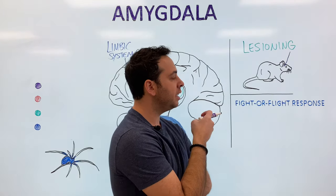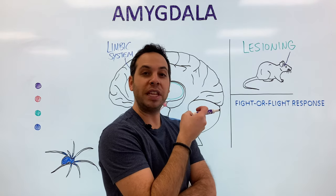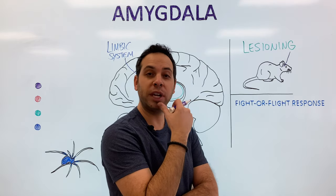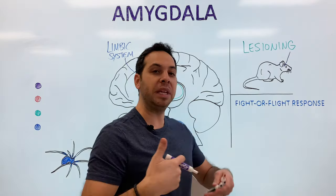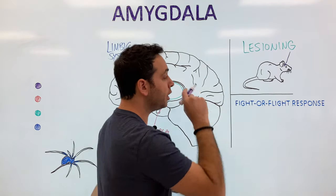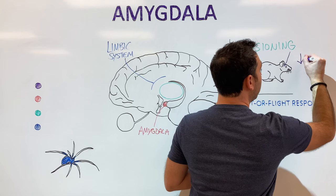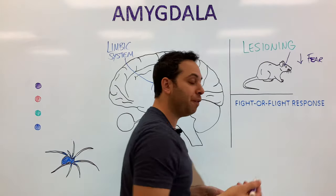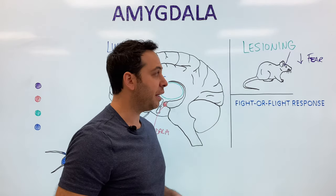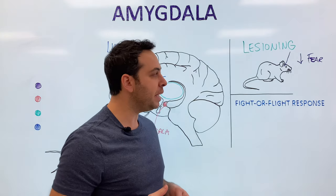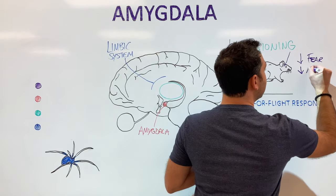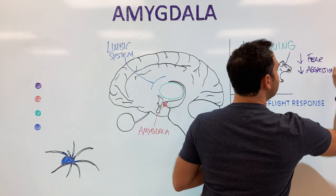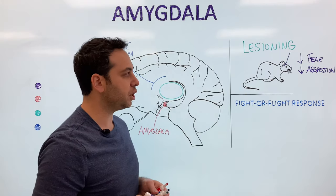If you deep lesion the amygdala — if you damage or remove it — what happens? If your amygdala was damaged, there could be two consequences. One is essentially a reduction in a fear response. The fight-or-flight response won't necessarily be there. What we'll also see is a reduction in aggression. Those are two side effects of lesioning in animals.